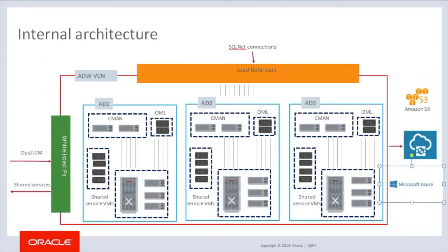Although the Autonomous Database environment is hosted on Exadata, which itself provides high availability by the nature of the Exadata, the Oracle Cloud Infrastructure data centers on which they are hosted provide an additional layer of availability through their availability domains. Autonomous Database is hosted in regions and availability domains. A region is a localized geographic area, and an availability domain is one or more data centers located within a region. Each Autonomous Database environment comprises several components including the Exadata servers, Exadata storage servers, Oracle Machine Learning servers, the CMAN, and shared servers. This same architecture is replicated across availability domains to provide redundancy.